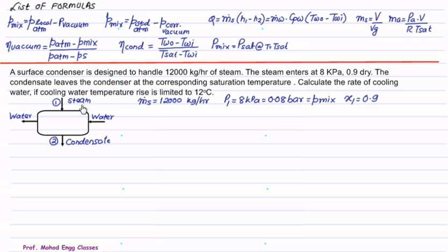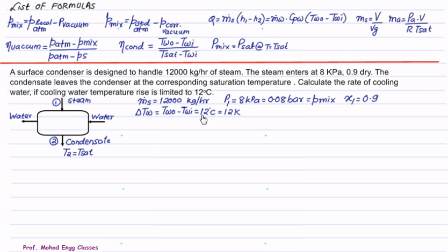In the systematic sketch, steam from the turbine enters at point 1 and leaves as condensate. Water enters at the inlet temperature and exits at the outlet temperature. The mass flow rate of steam is 12,000 kg per hour, pressure of steam is 8 kPa, and the dryness fraction is 0.9. The rise in temperature of water, TWO minus TWI, is limited to 12 degrees Celsius, which is the same as 12 Kelvin.